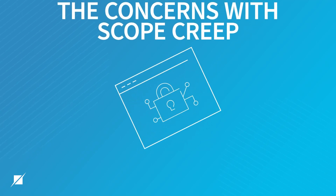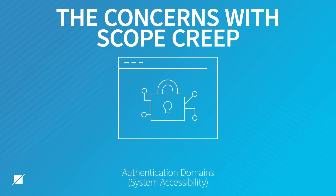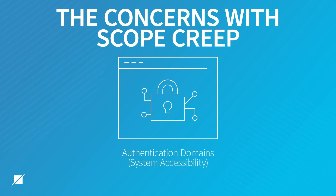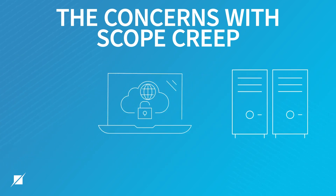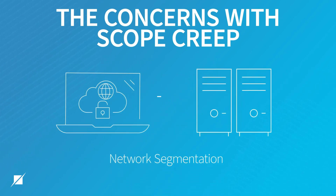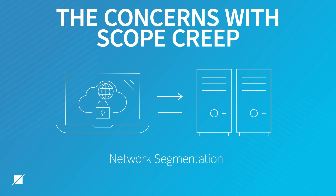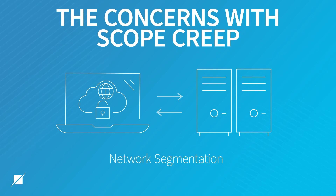The biggest concerns we see with scope creep revolve around authentication domains where systems were more accessible than you thought. Another big concern is network segments that aren't truly segmented, where rules permit traffic to flow bi-directionally, where the exchange of data that you don't want to leave your organization very well could.